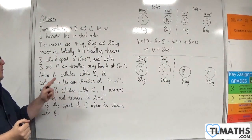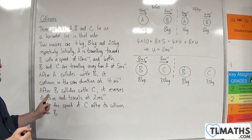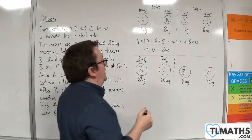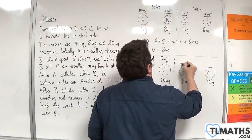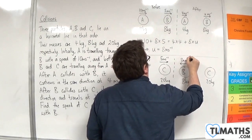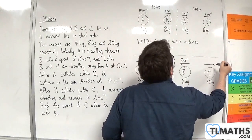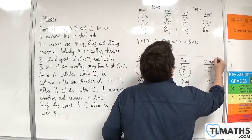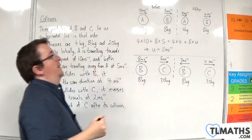After B collides with C, it reverses direction and travels at 2 metres per second. So B is going to travel to the left at 2 metres per second. Whereas C is going to continue and I'm going to label that as V metres per second. It's V that I want to find.